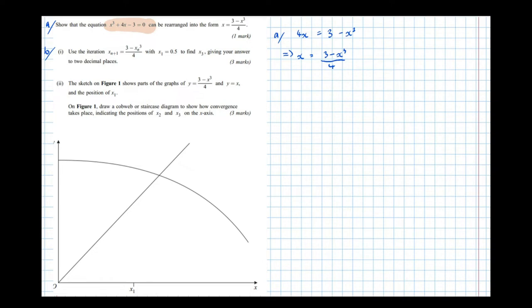So in a previous video, we had a look at a method called fixed point iteration for solving simultaneous equations, one of which is y equals x, the other of which is a curve. Well, now that we've rearranged the equation into this form, we can see that's what we've got. We've got the equation y equals x on the left hand side, and y equals the equation of a curve on the right hand side. So the fixed point iteration method is now applicable.